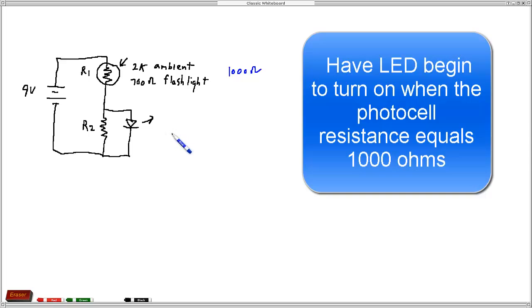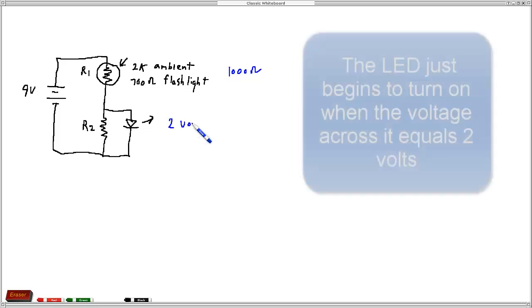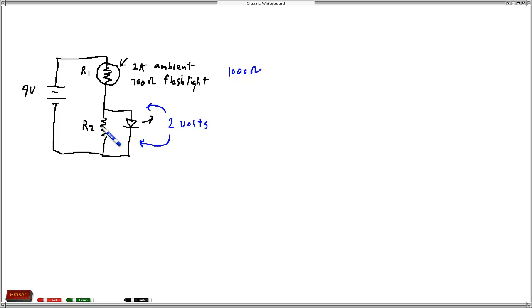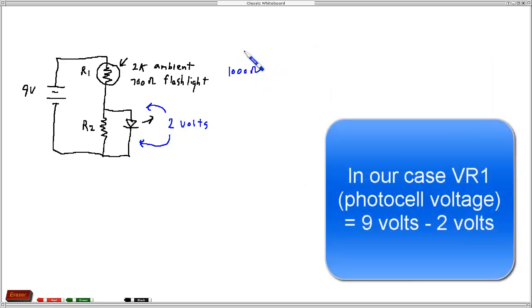The next thing to figure out is what are the voltages. We have a 9 volt battery, and the LED is a green LED that requires 2 volts to turn on. So this voltage has to be 2 volts across the LED and R2, since these two are in parallel. Using Kirchhoff's voltage law, the voltage across the photocell has to be 9 volts minus 2 volts, or 7 volts.